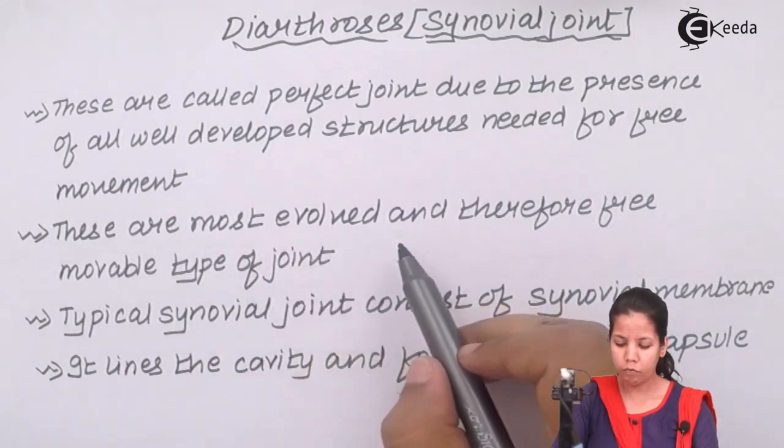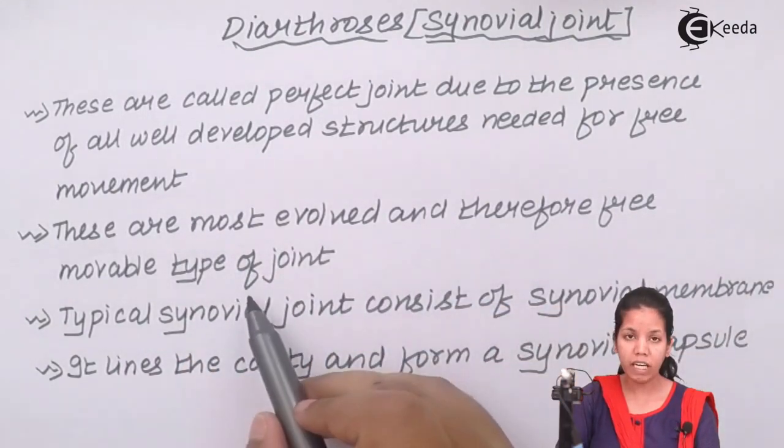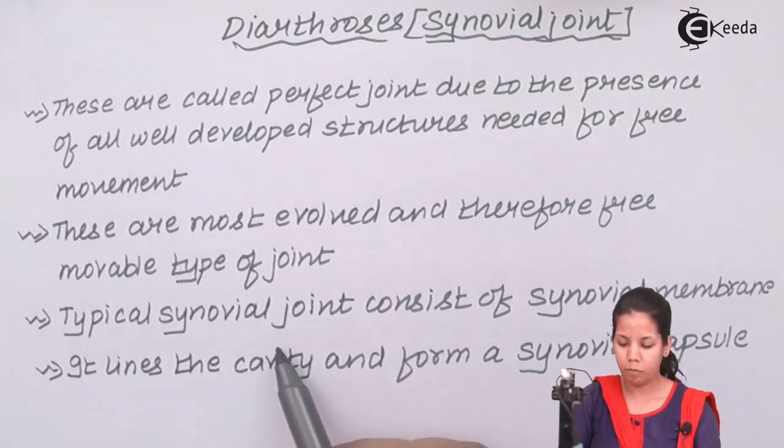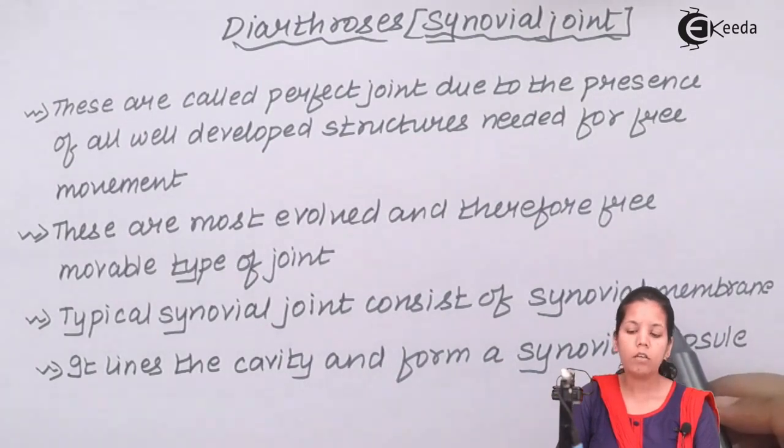They are the most evolved and therefore they are a freely movable type of joint. A typical synovial joint will basically consist of synovial membrane, synovial fluid, and hyaline cartilage.